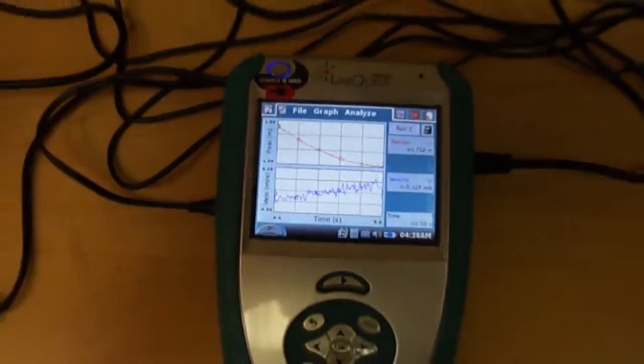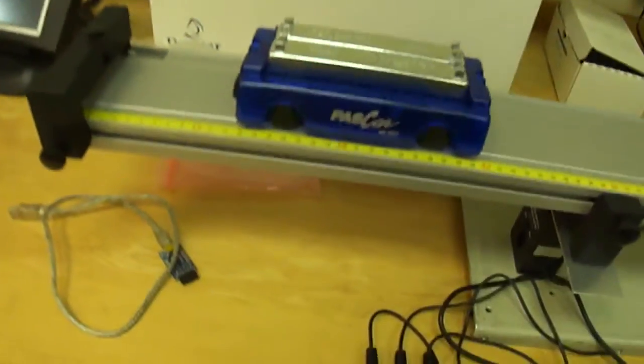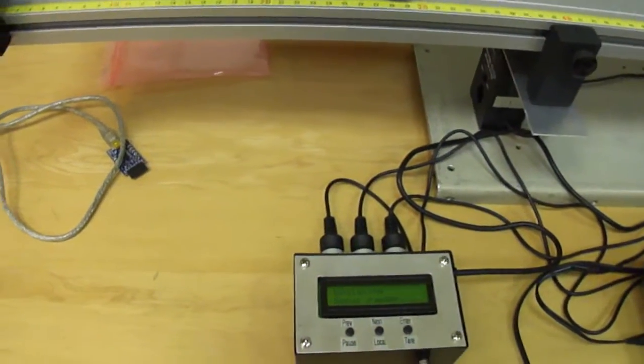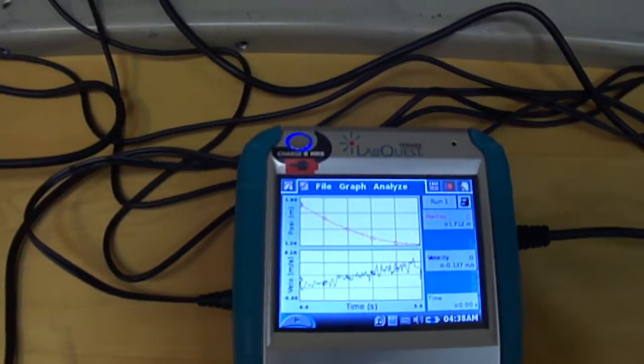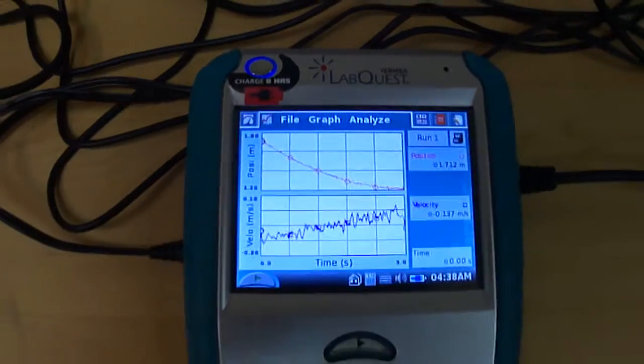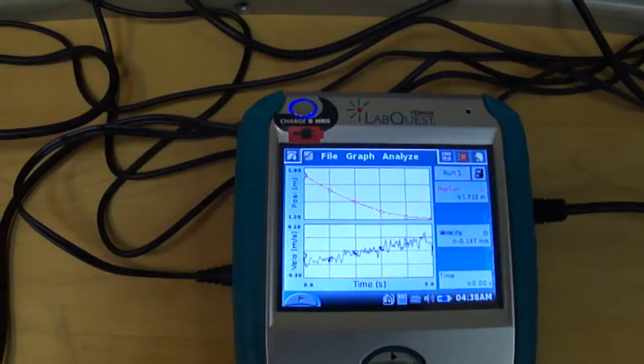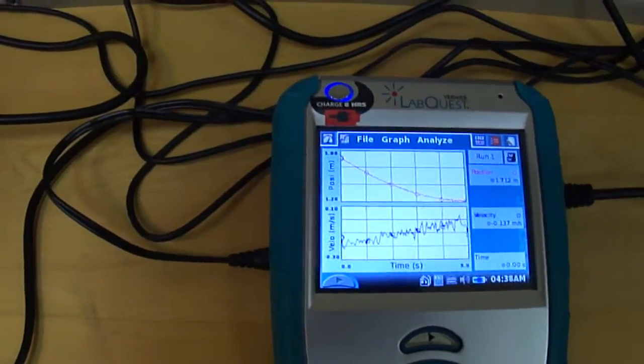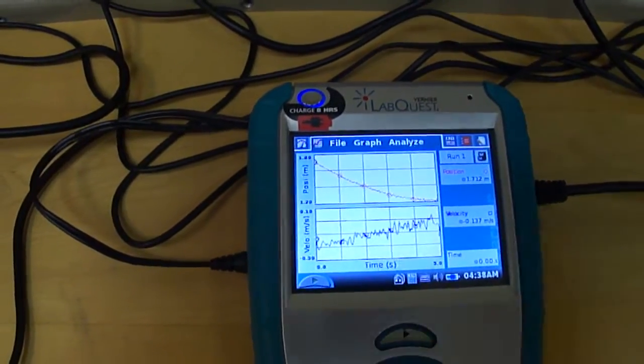So that concludes the short demonstration of this track. It is basically able to report position and is also able to emulate a Sonic Ranger. So it reports Sonic Ranger location to all LabQuest or other Vernier lab interfaces so that you can actually integrate this into your own lab without having to change any procedure. Just pretending this apparatus is a Sonic Ranger. And thank you for watching.